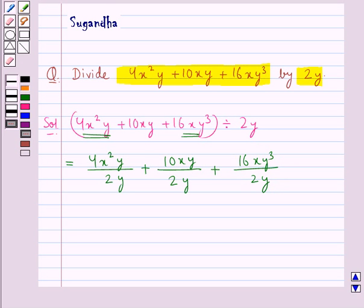We already know to divide a monomial by another monomial. So now 2 times 2 is 4. This y cancels with this y and we are left with x square multiplied by 2.